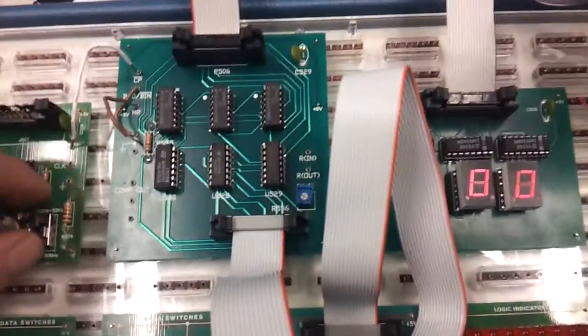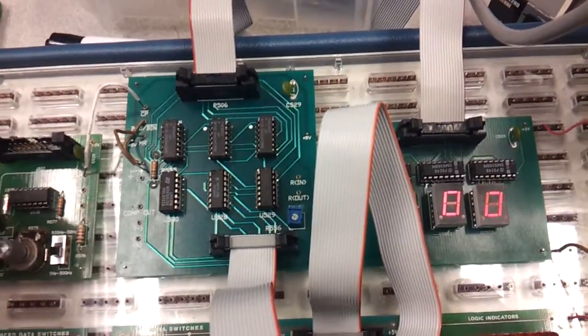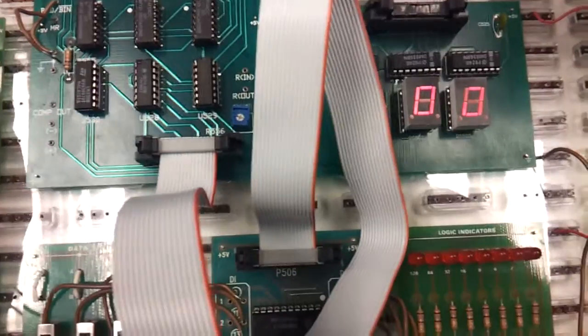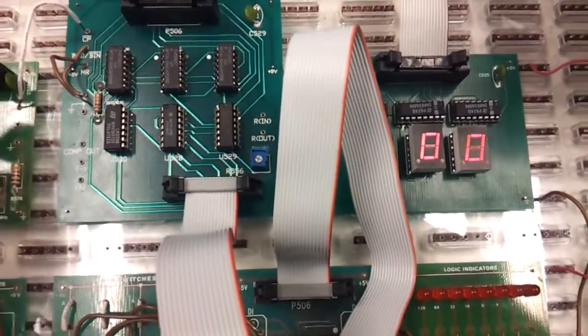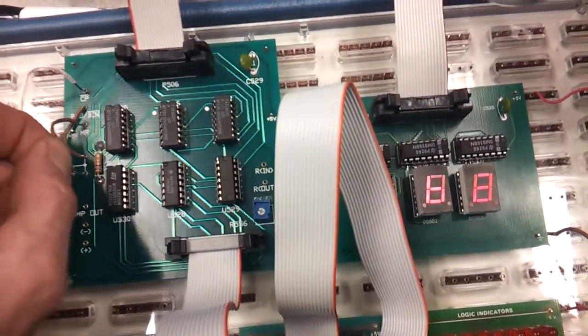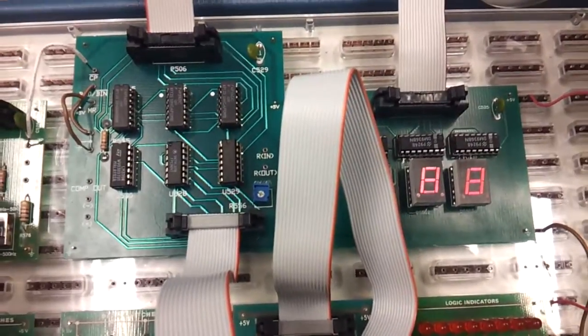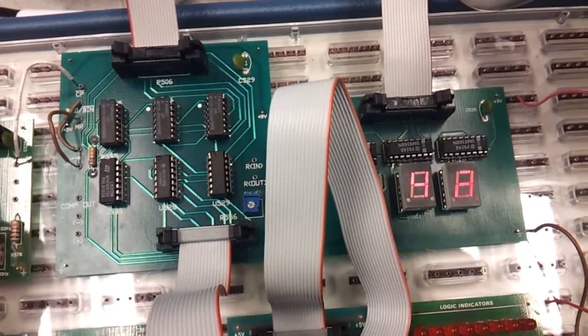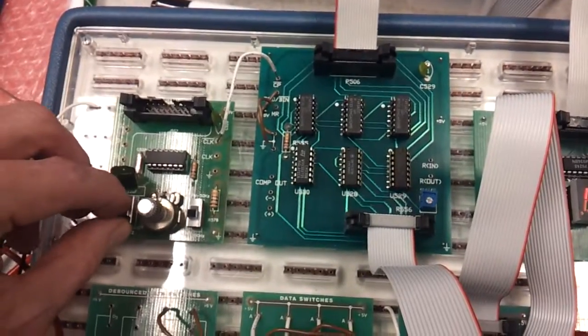To erase the entire chip, I turn the clock on and I'm going to cycle through all 256 addresses. And that's more than erased. Turn the clock off.